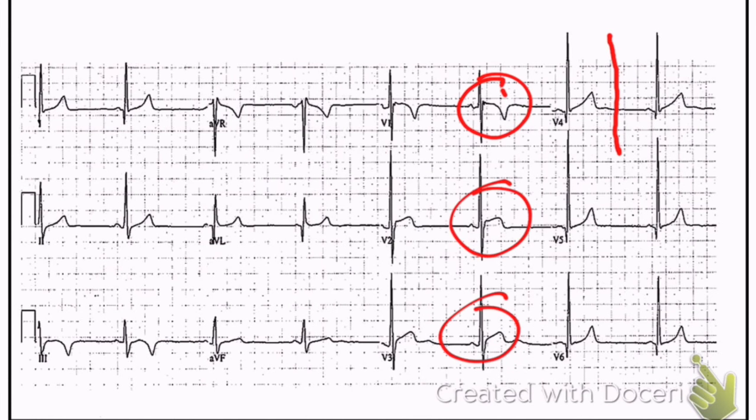There is no RSR pattern in V1, V2, V3. There's no slurring of the upstroke. There's no short PR intervals. That's a little short, but there's no slurring of the upstroke here.